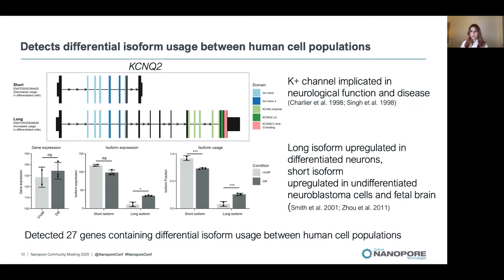We next performed a differential isoform usage analysis to complement the differential expression analysis. Differential isoform usage occurs when the proportion of total gene expression from each of a gene's isoforms differs between conditions. Although overall gene expression may remain constant, the fractions of isoforms expressed may change. Looking at the proportions of isoforms expressed gives a more complete picture at the isoform level, since differential transcript expression often simply recapitulates results shown at the gene level.